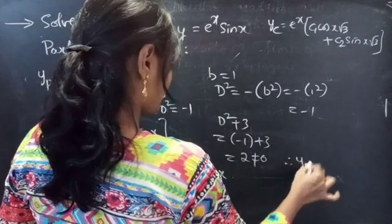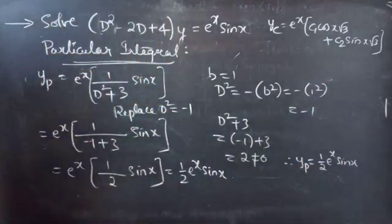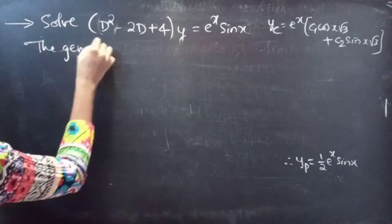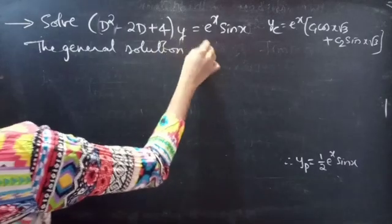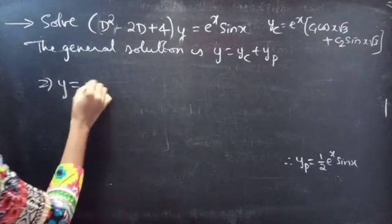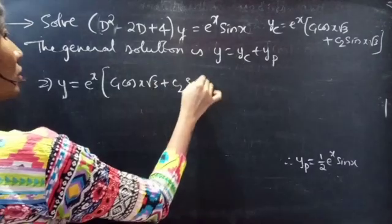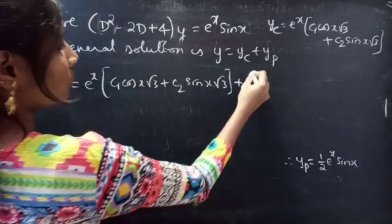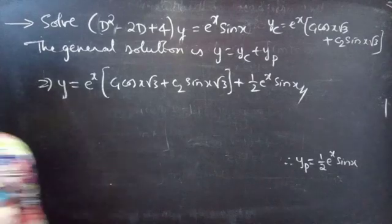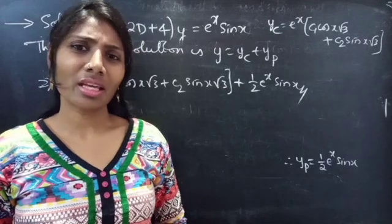Therefore yp equals 1/2 · e to the power x · sin x. We got yc and yp, so let's write the general solution. The general solution is y equals yc plus yp, which gives y equals e to the power x times (c1·cos(√3·x) + c2·sin(√3·x)) plus 1/2 · e to the power x · sin x. This completes the problem. So we have seen a problem from higher order linear differential equations in this video. Hope you understand. Bye bye.